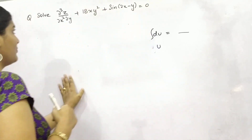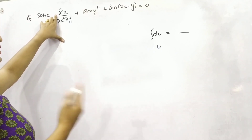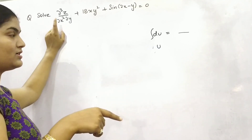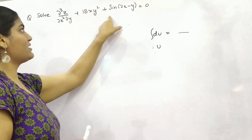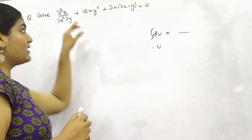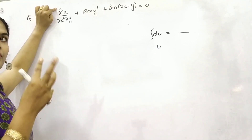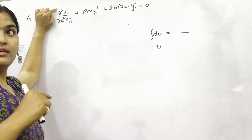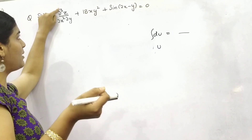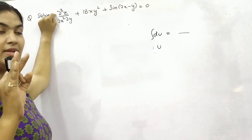Let's begin with an example. You can see here — you need to solve the triple partial differentiation of z with respect to y, then double differentiation with respect to x, equal to 18xy² + sin(2x − y) = 0. Consider your highest order: this partial differentiation is of order 3, because the question has given us the number 3 in the power, so it's been differentiated 3 times.